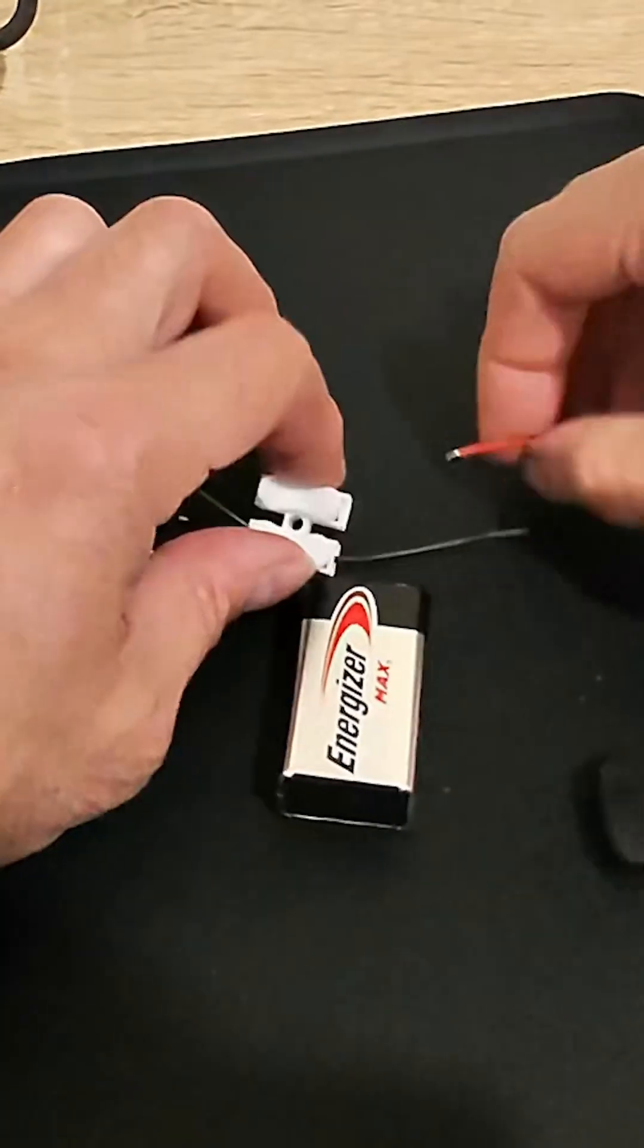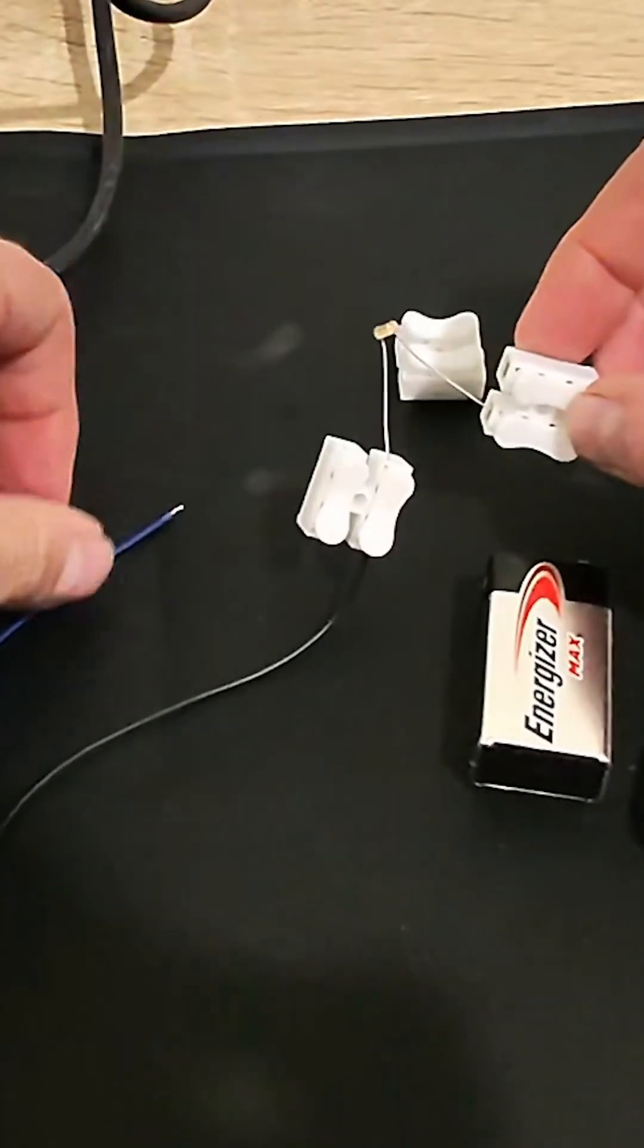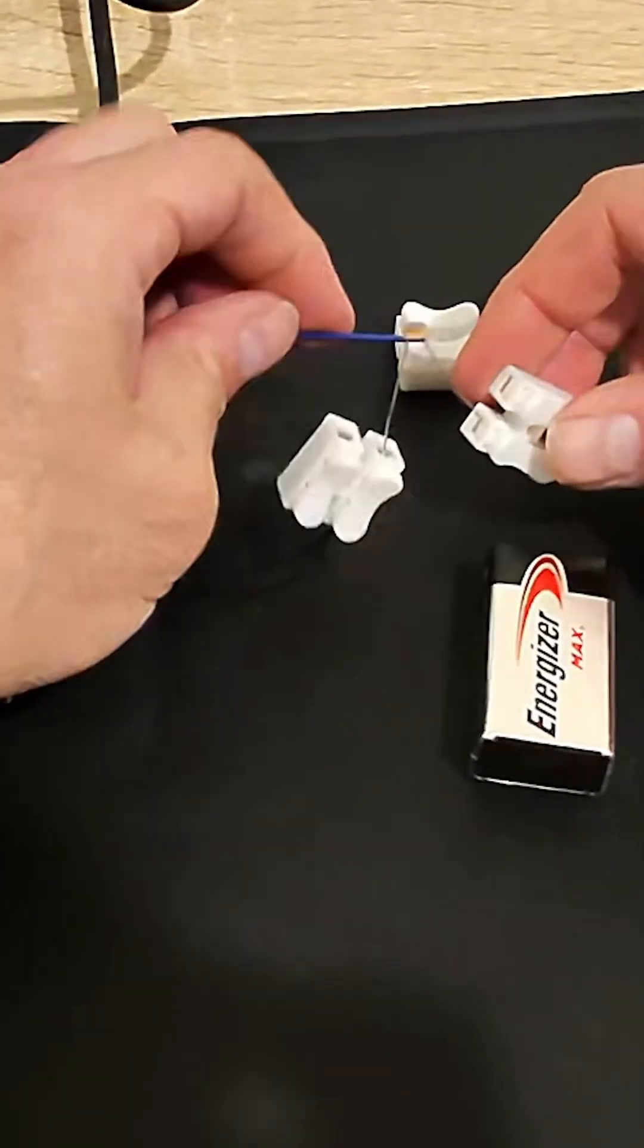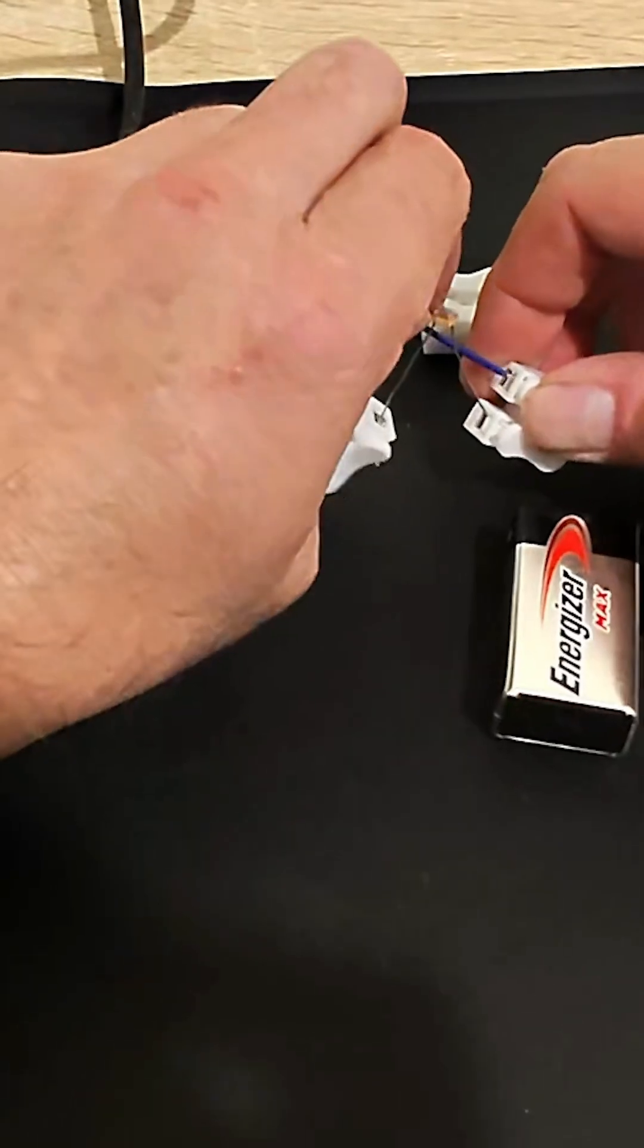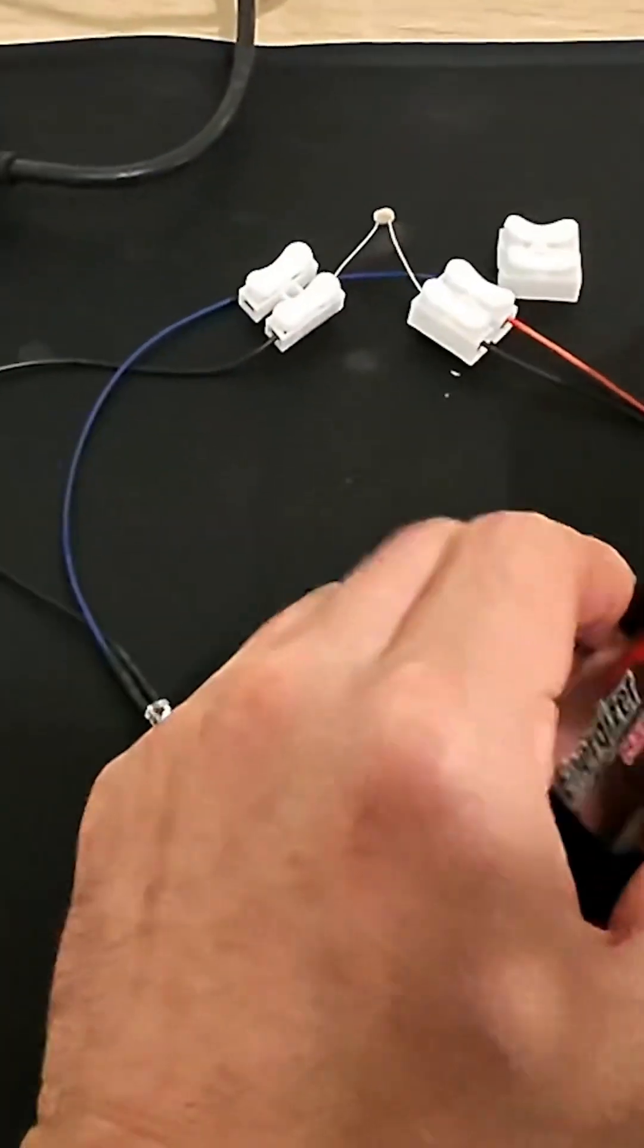And then we're going to take the red wire, which is our positive for the battery, and we're going to connect it to the quick connect. And then we're going to take the LED's blue wire, in this case it is the positive, and connect it to the positive of the battery.